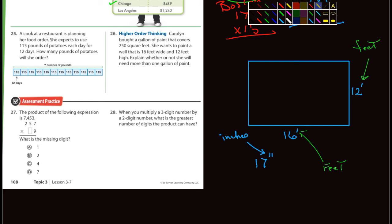What are they asking us to do? She's got 250 square feet, explain whether she will need more than one gallon of paint. One gallon is 250 square feet. How do you figure out area? Area equals length times width. You're gonna have to do 16 times 12, and if that number is larger than 250 square feet, then she doesn't have enough paint.